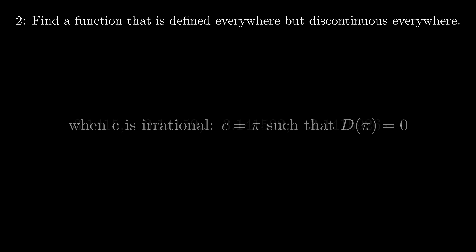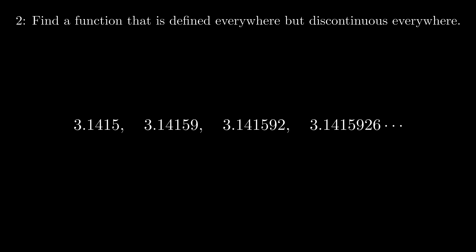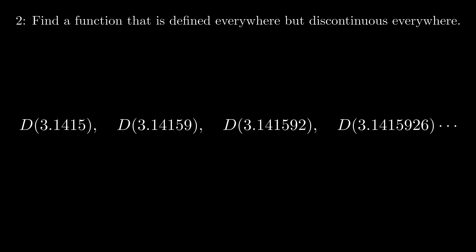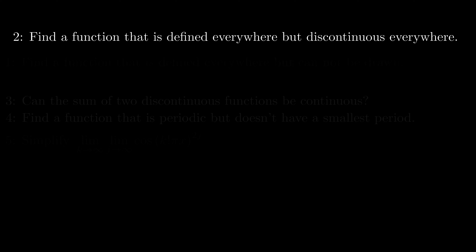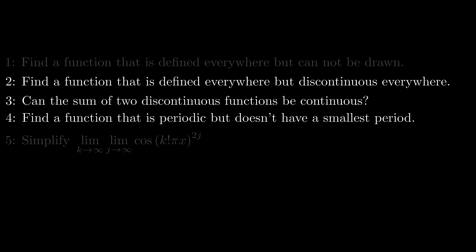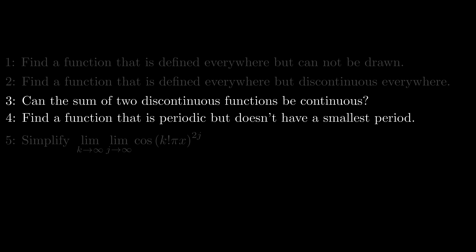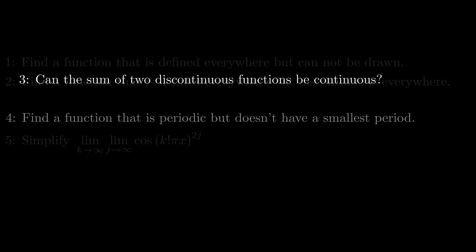How about an irrational point? Let's say c is π. So d(π) is zero, and I can just pick the first n digits of π — they are all rational. So I can construct a limiting process that's always one, which is never equal to the actual value of d(π). So the Dirichlet function is defined everywhere but discontinuous everywhere.